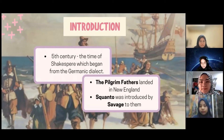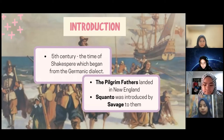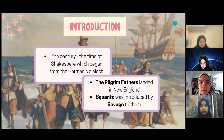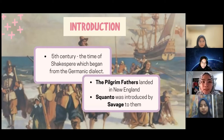In November 1620, the Pilgrim Fathers landed in New England and created a settlement in Plymouth Plantation. Squanto is the most important person in this story. He was introduced by Savage to the Pilgrim Fathers to help them continue living. They picked up some English words to communicate with each other, and he successfully taught them how to farm and make their own food.